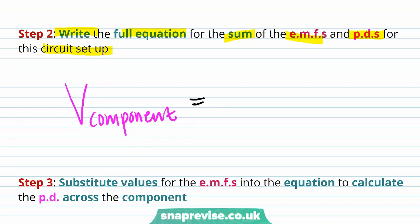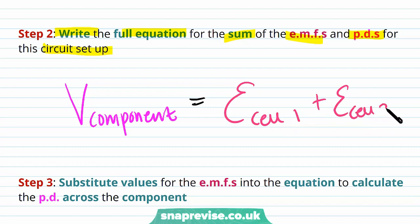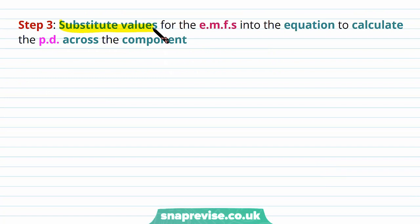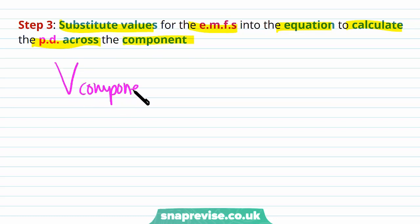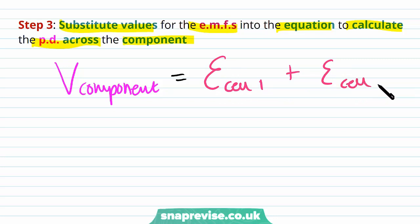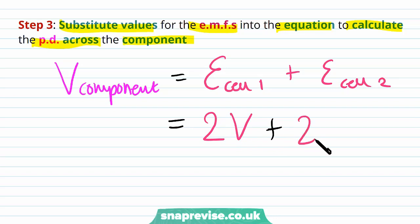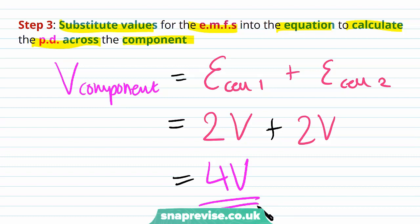The sum of the EMFs equals the EMF of cell one plus the EMF of cell two. Substituting in our values — both cells have an EMF of two volts — we get two volts plus two volts, giving an overall potential difference of four volts across the component.